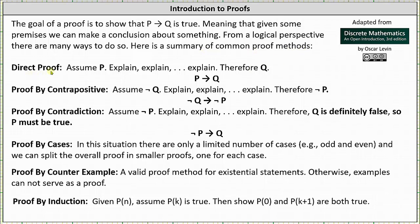First we have the direct proof method. For this form of proof we assume p, explain, explain, explain, therefore q is true. A direct proof takes the form of if p then q.